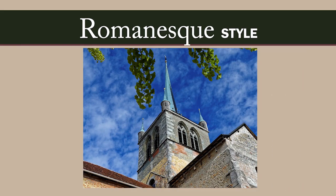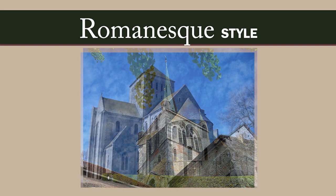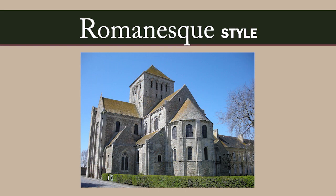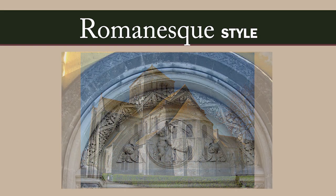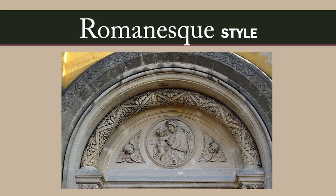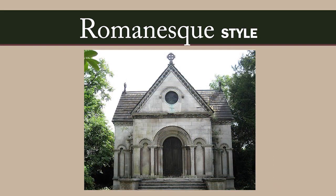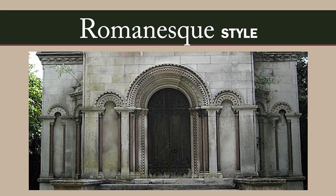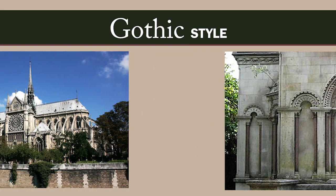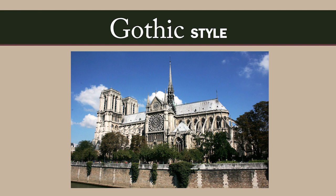From the 6th to the 10th century, churches and abbeys in Europe were built using Romanesque architecture. Semi-circular arches, symmetrical design, and thick walls are features of Romanesque mausoleums, which can also include rusticated stone and medieval columns.